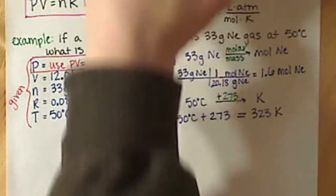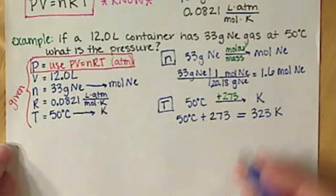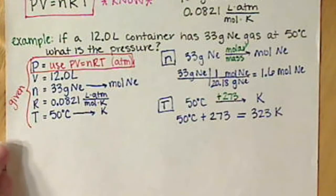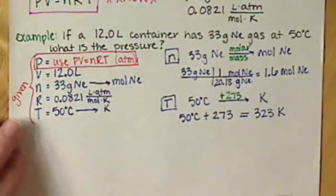Look at our neon here. We have 33 grams divided by 20.18. And I have 1.635. I started off with two sig figs. So I need two sig figs in the end. So I'm going to have 1.6 moles of neon.